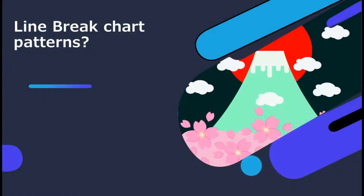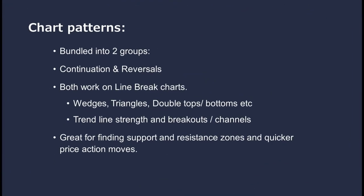You can use traditional chart patterns on line break charts. Traditional chart patterns are bundled into two groups — continuation and reversal patterns — and both work on our line break charts, whether that be wedges, triangles, double tops, treble tops, bottoms, and so on. Trend line strength and breakout channels all work very well on line break charts and should be used to supplement your analysis.